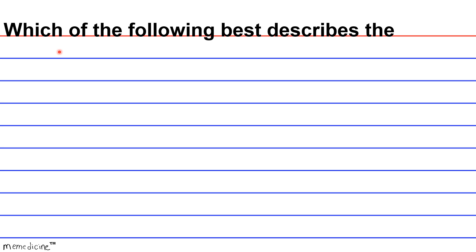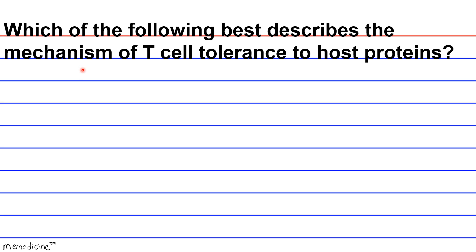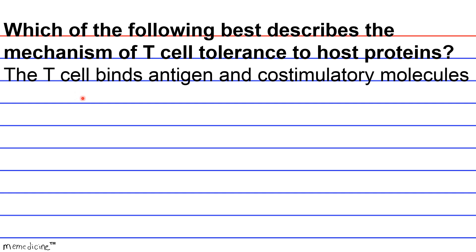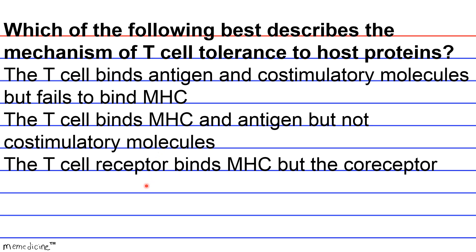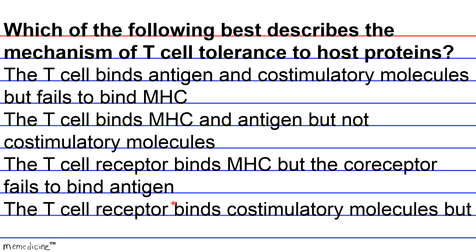Question: Which of the following best describes the mechanism of T-cell tolerance to host proteins? A) The T-cell binds antigen and co-stimulatory molecules but fails to bind MHC; B) the T-cell binds MHC and antigen but not co-stimulatory molecules; C) the T-cell receptor binds MHC but the co-receptor fails to bind antigen; or D) the T-cell receptor binds co-stimulatory molecules but fails to bind MHC?